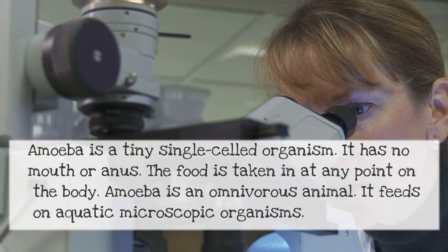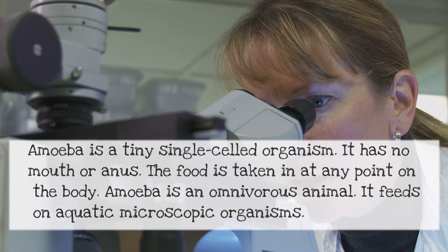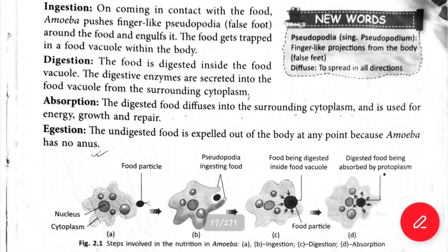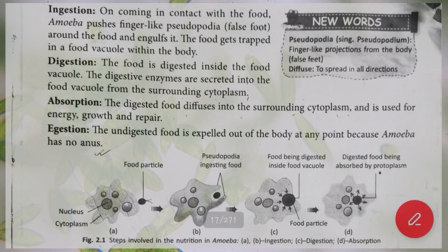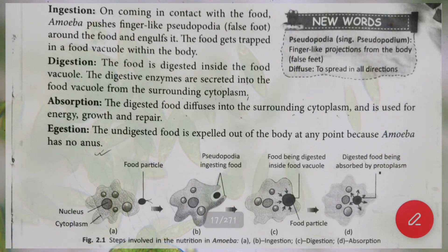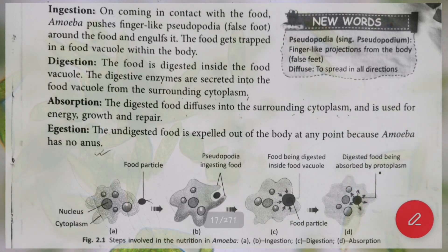Now we will talk about the nutrition process in amoeba: how ingestion happens, how digestion happens, and how absorption happens. The steps are: first ingestion, second digestion, third absorption, and fourth egestion.